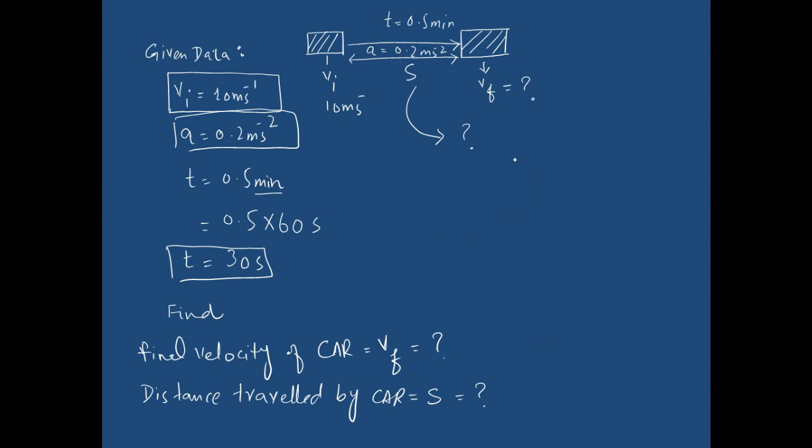What is the solution of this problem? To find the distance, we use the second equation of motion: s equals vi times t plus half a t squared.